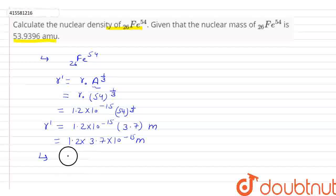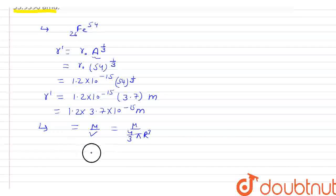Now, aapko formula pata hota hai - nuclear density is mass by volume. For a spherical nucleus, density = m/(4/3 πr³), where r is the radius of nucleus.